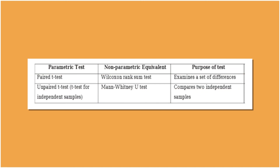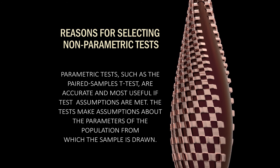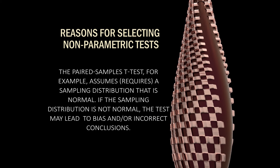Parametric tests make assumptions about the parameters of the population distribution — often that data are normally distributed. Non-parametric tests are distribution-free and can be used for non-normal variables. For comparison: the parametric paired t-test corresponds to the non-parametric Wilcoxon signed-rank test (examining a set of differences); the parametric unpaired t-test corresponds to the Mann-Whitney U test (comparing two independent samples).